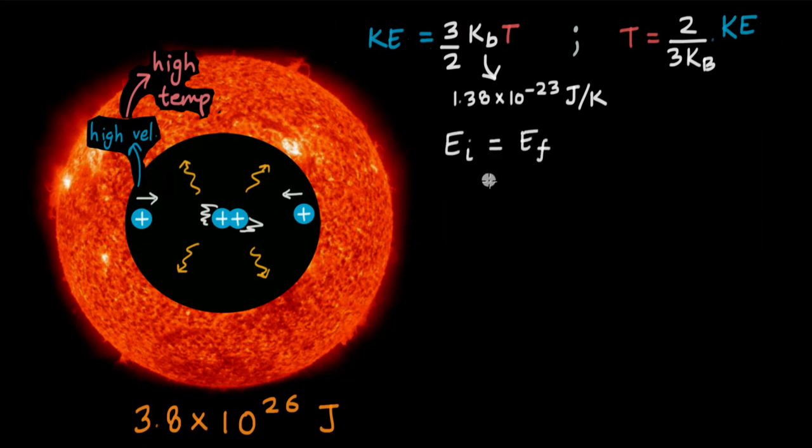And according to conservation of energy principle, we can write that the total mechanical energy initially, when the protons were far apart, is equal to the total mechanical energy finally, when the protons are close enough to fuse. We can expand this and write it in this manner. The total mechanical energy initially and the total mechanical energy final. Here, U is the potential energy, initial and final.